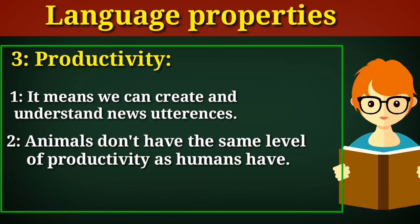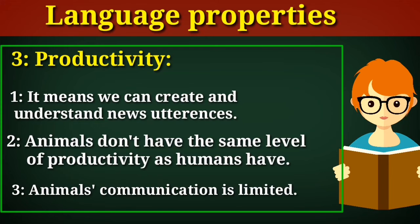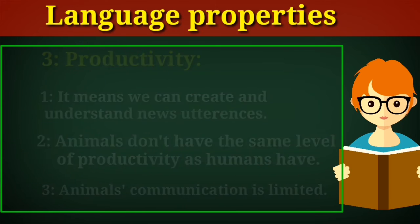Basically, animals also communicate with one another, but they do not have the same level of productivity in language as humans have. Simply you can say animal communication is very limited but human communication is not. So this property of language is called productivity — we can create new expressions but animals cannot, because their way of communication is quite limited.